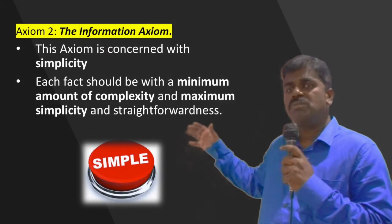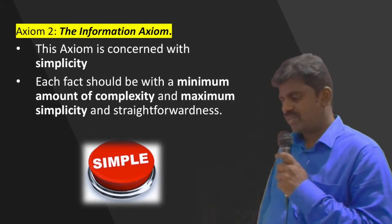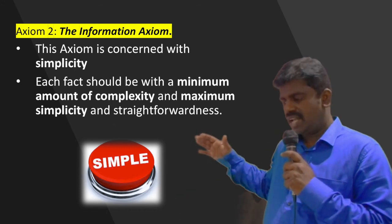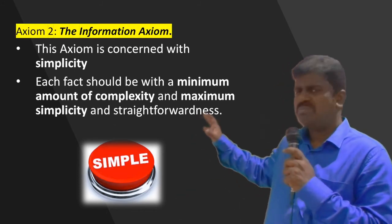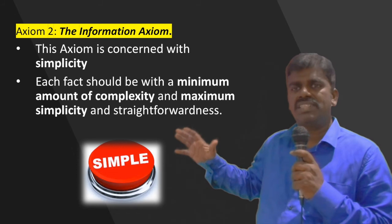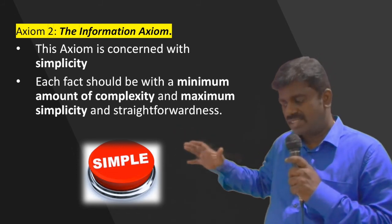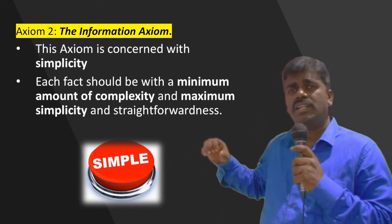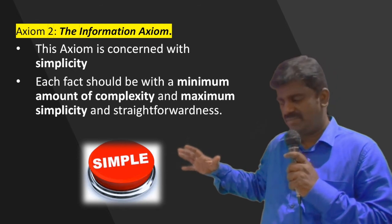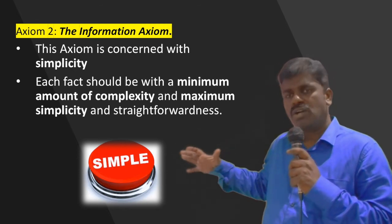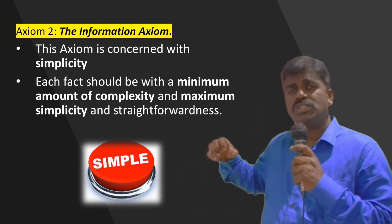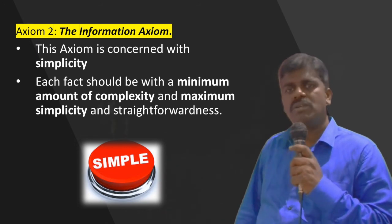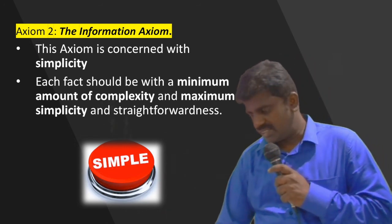The second thing is the information axiom. When you see here, this axiom is concerned with simplicity — it should be simple and easily understandable by the user. It should reduce complexity, maintain a minimum amount of complexity, and it should be straightforward. So that will be the information axiom.